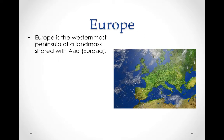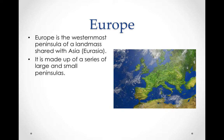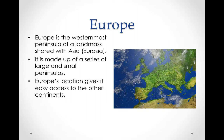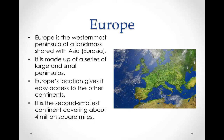Europe is the westernmost peninsula of a landmass shared with Asia, often called Eurasia. It is made up of a series of large and small peninsulas. Europe's location gives it easy access to other continents, and it is the second smallest continent, covering about four million square miles.